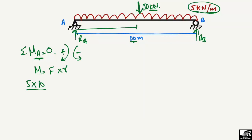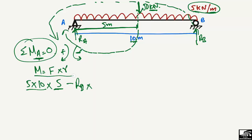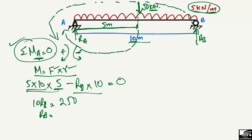The center of the beam is at 5 meters from point A, so the moment arm is 5 meters. This 50 kN load creates a clockwise moment about point A. RB creates an anti-clockwise moment, so it is negative, with a moment arm of 10 meters. Setting the summation of moments about A equal to zero: 50 × 5 − RB × 10 = 0, giving 10·RB = 250.